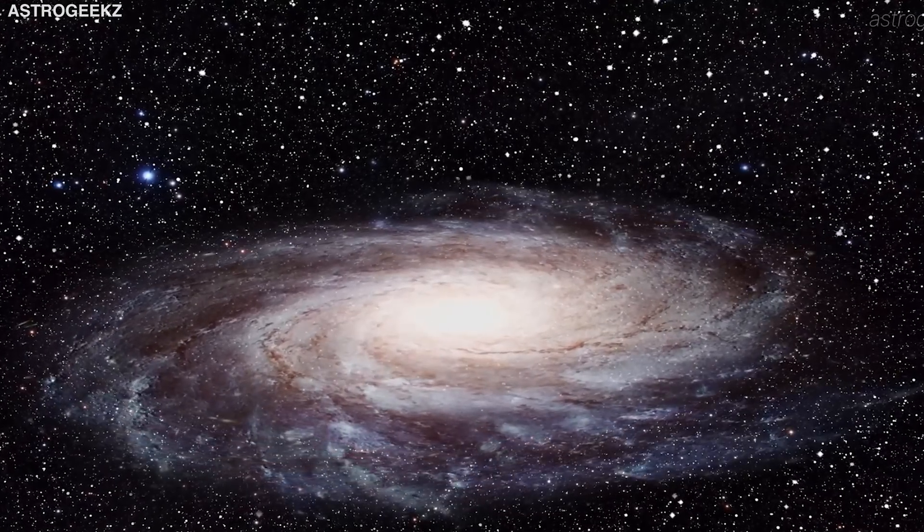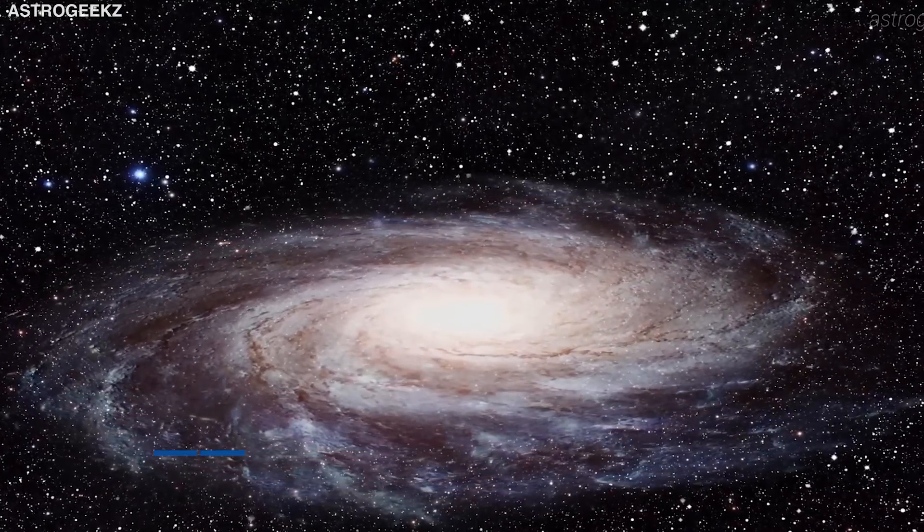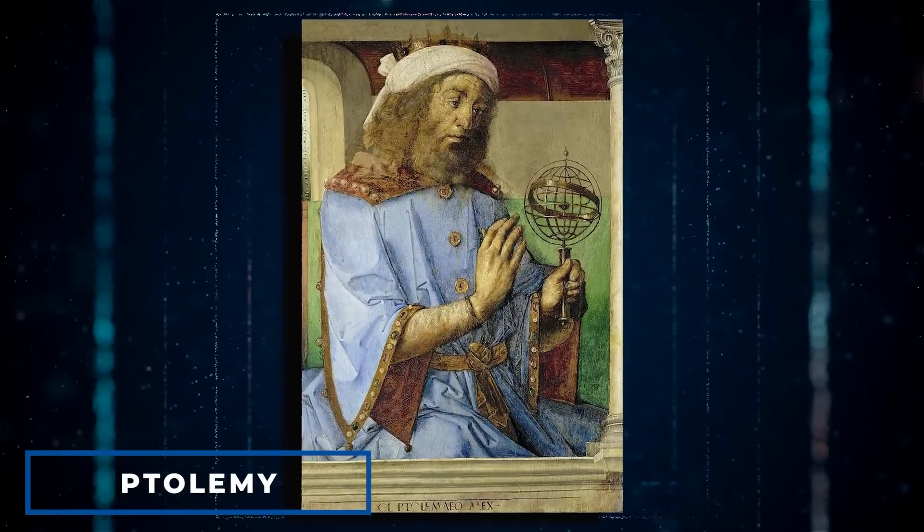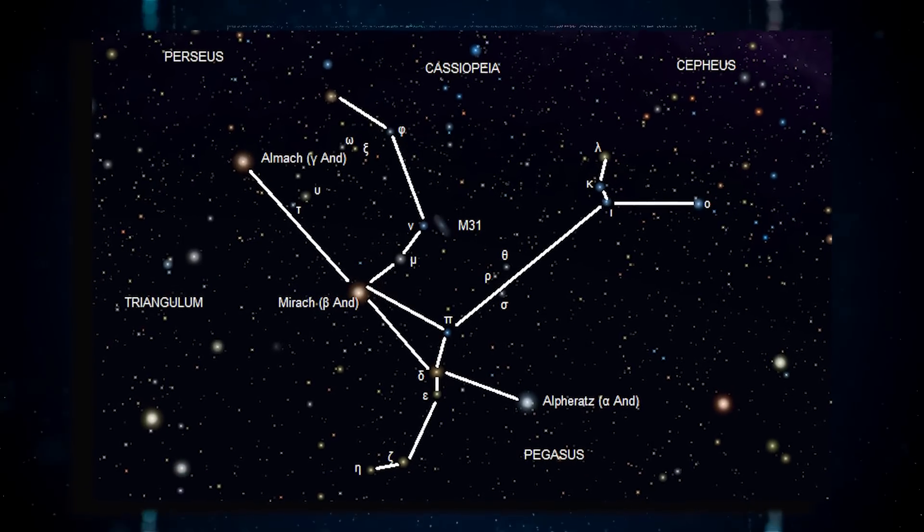The constellation was initially catalogued in the second century by the Greek astronomer Ptolemy, and it is also known as Chained Maiden, Perseus, or Cepheus.